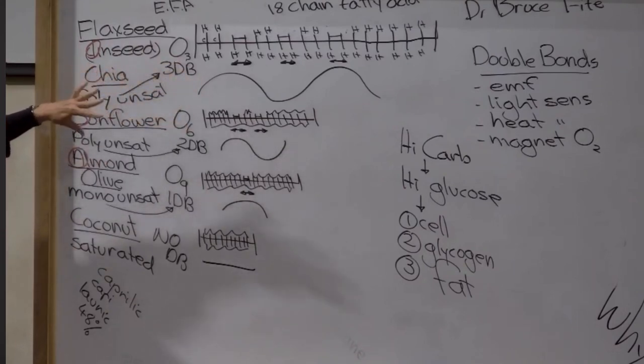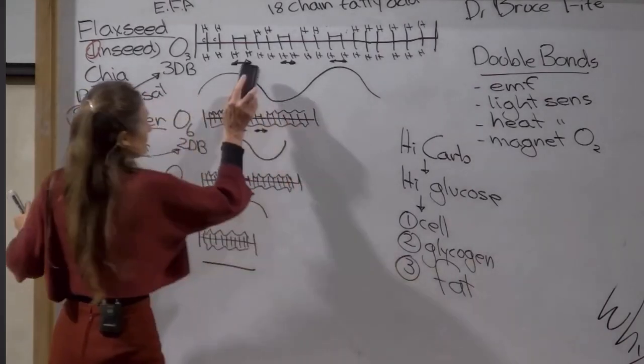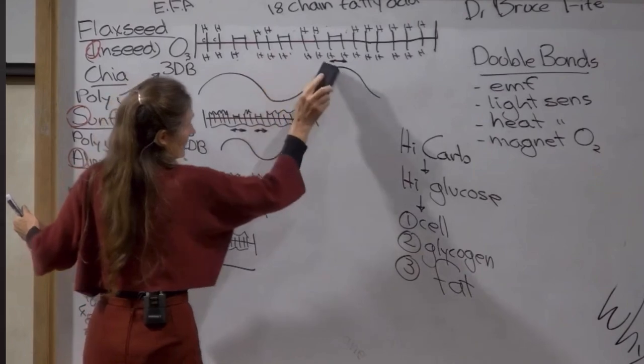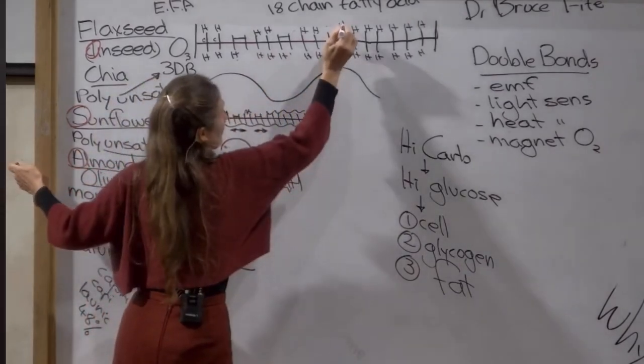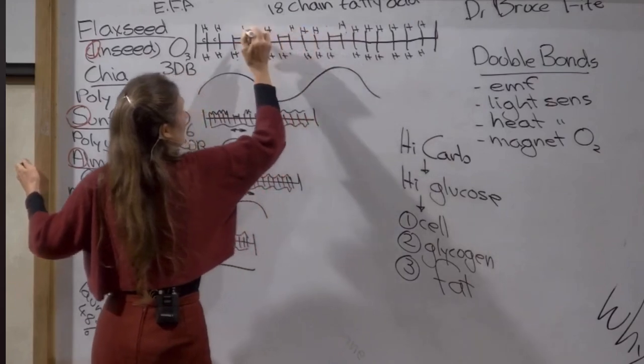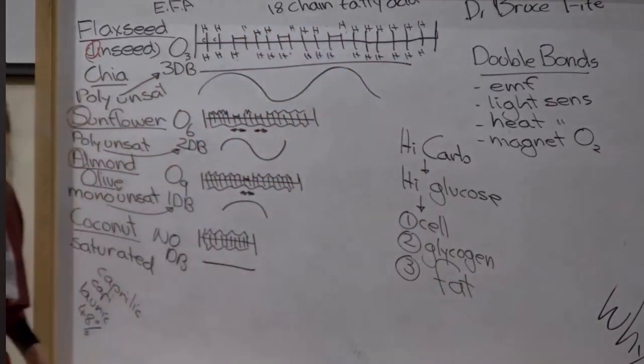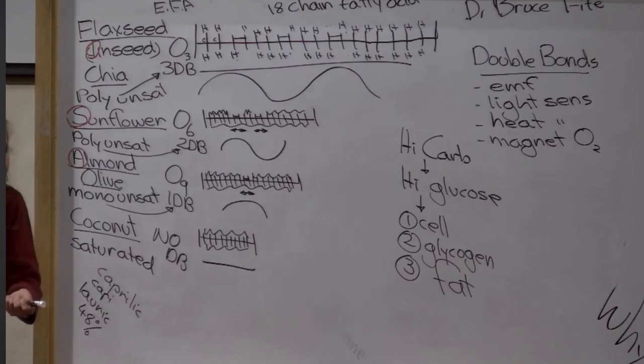And the catalyst is either nickel or aluminum. You know what that means? Every tub of margarine has nickel or aluminum in it. And when they saturate it, it causes these hydrogen atoms to flip over to the other side. Now it's saturated. Every tub of margarine is a saturated fat. Because if it wasn't, you'd open it and it would be liquid.